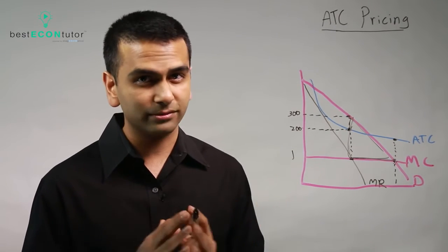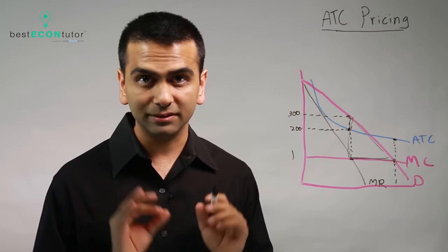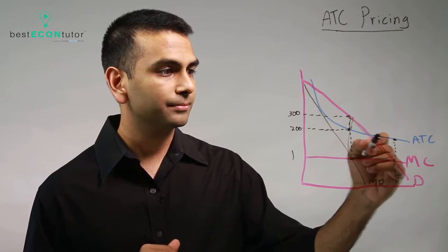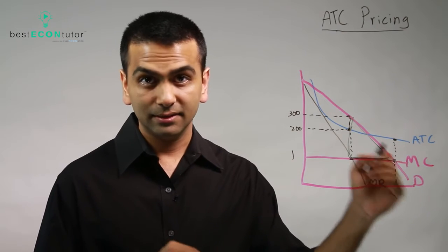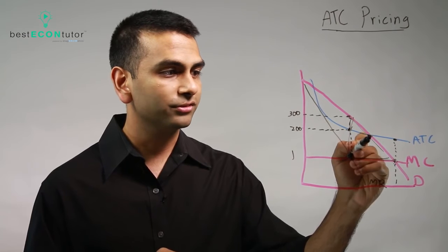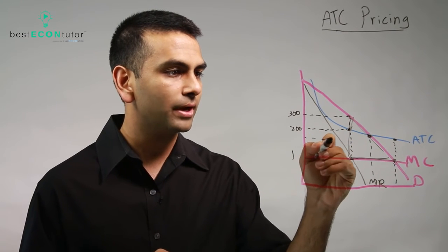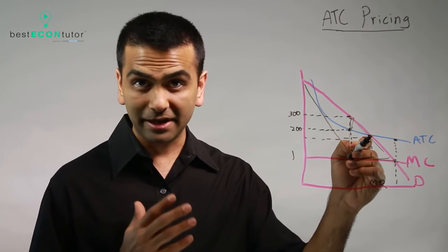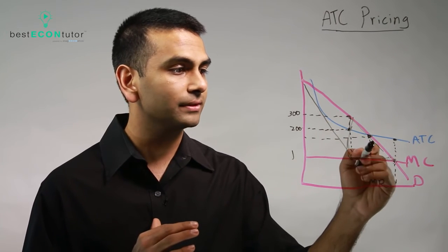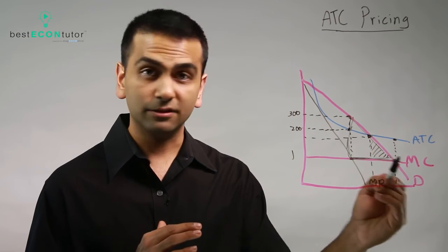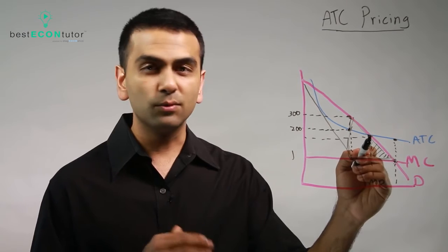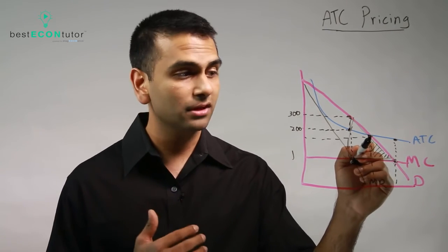So the compromise is what's called ATC pricing, and that's where you force them to produce not where MC and demand intersect, but where ATC and demand intersect. So you're forcing them to produce this quantity at this price. So here's the benefit of it: the deadweight loss, instead of being all this if you were to do nothing, the deadweight loss is only this much, because that's how far off you are from perfect competition.